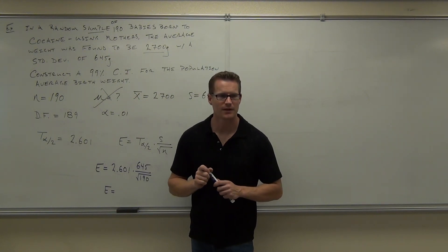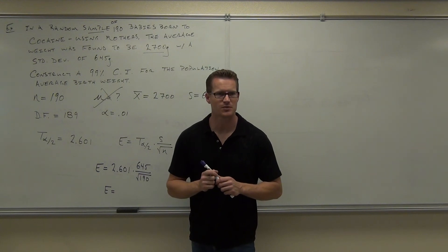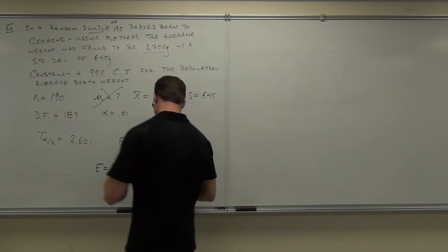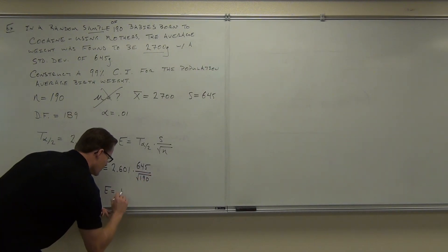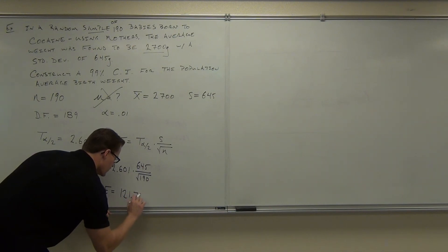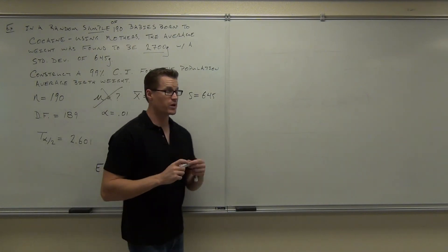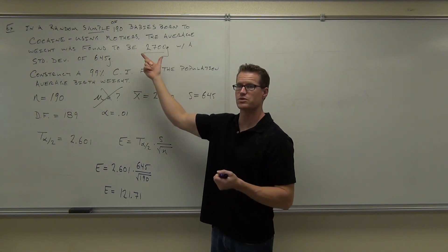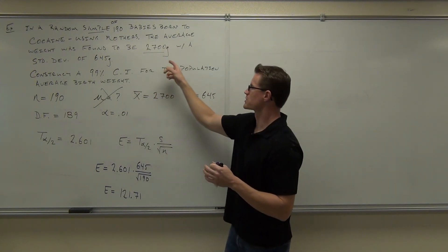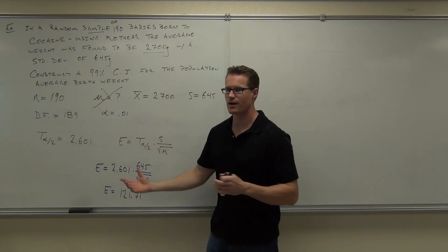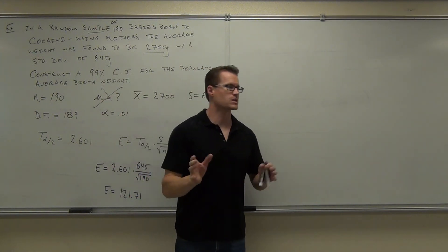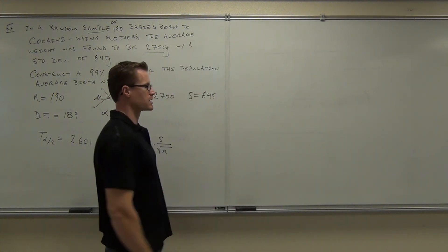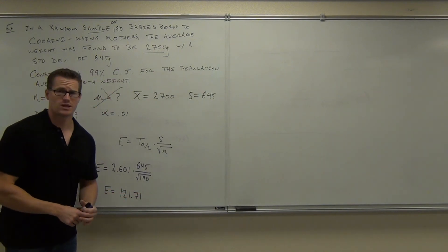121.71. Now, that seems kind of large, but when you think about it, the average weight was 2,700 grams. That's large, with a standard deviation of 645. So your margin of error when you do it with means can be almost anything there. It just depends on what your context is. What do you do now?